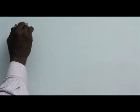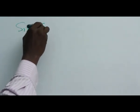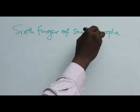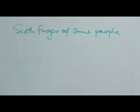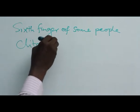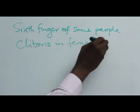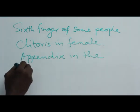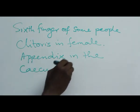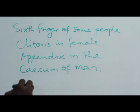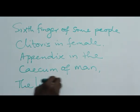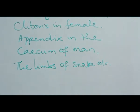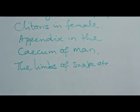Vestigial structures are like the sixth finger of some people — a flap of tissue of no use. Examples include the clitoris and female appendices, the coccyx of man, and the limbs of snakes. These have become vestigial structures; they are no longer used by the organisms that possess them.